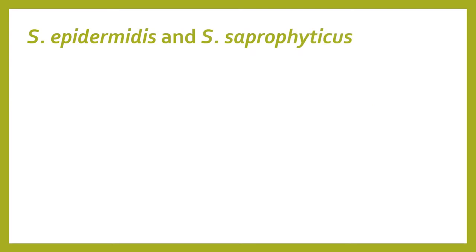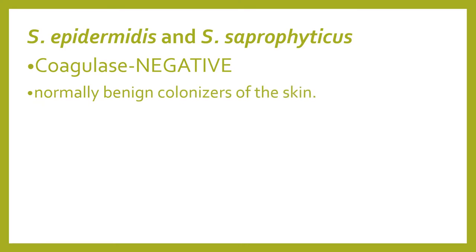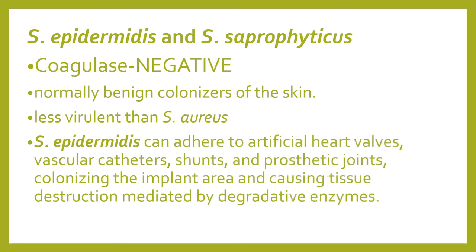Now the two other species: Staphylococcus epidermidis and Staphylococcus saprophyticus. Whereas Staphylococcus aureus is coagulase-positive, these two are coagulase-negative — less problematic and normally benign colonizers of the skin. They are less virulent, but Staphylococcus epidermidis is known to adhere to artificial heart valves, prosthetics, vascular and IV catheters, ventriculoperitoneal shunts, and prosthetic joints, colonizing implant areas and causing tissue destruction mediated by degradative enzymes.